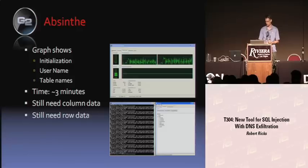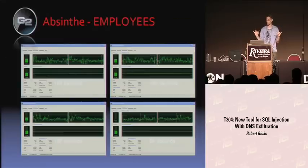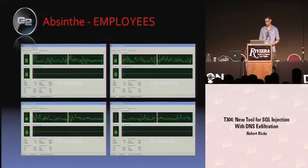With Absinthe we didn't get any column data, didn't get any rows of data. With my tool: 20 seconds for the schema, three minutes for all the data. If we were to get all the columns for the employees table — which is the biggest — it takes about ten minutes in Absinthe on this server. So there's a fairly big speed difference, doing about one bit versus 200 characters per request.